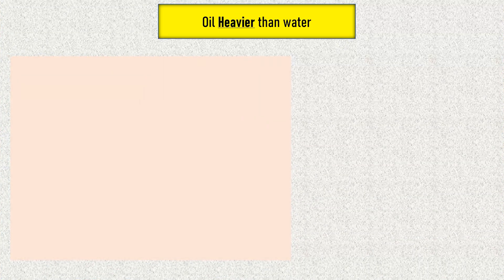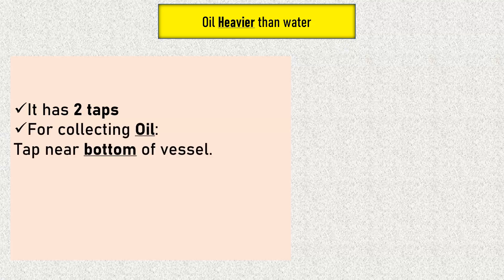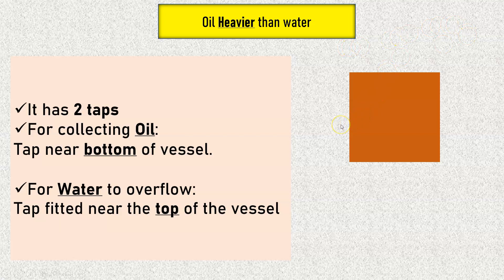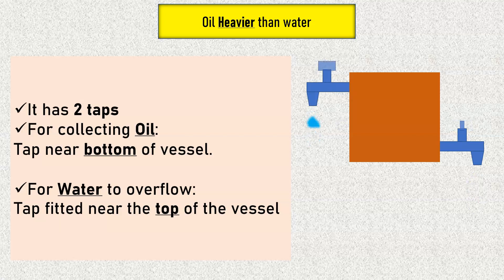For the Type 1 Florentine receiver — oil heavier than water — a tap is attached near the bottom of the vessel for collecting oil, and another tap is fitted near the top of the vessel for water to overflow. As seen in the diagram, the tap for collecting oil is fitted near the bottom of the vessel.